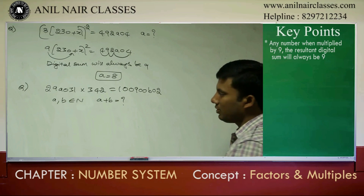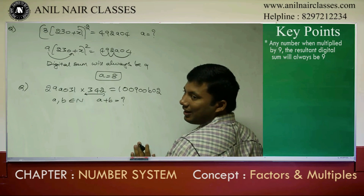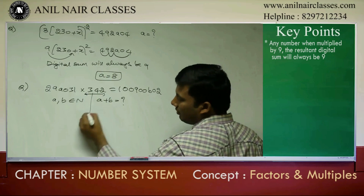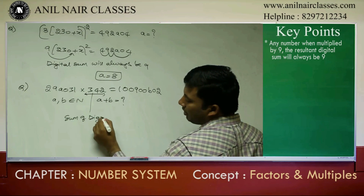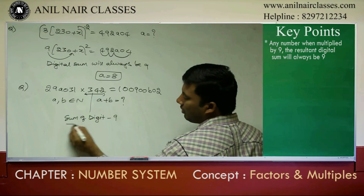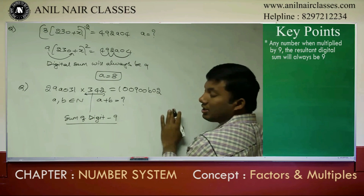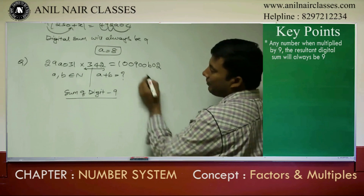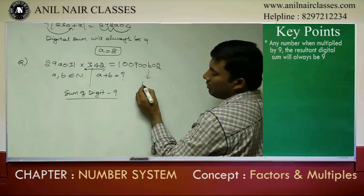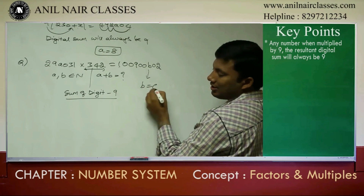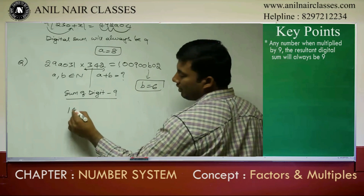What is 342? What is the sum of the digits? 9. So, sum of the digits here is 9. If you multiply any number either by 9 or any number which has digit sum 9, the answer's digital sum should always be 9. 9 plus 1 is 10, 10 plus 2 is 12. So what is the B value? 6. B value is 6.